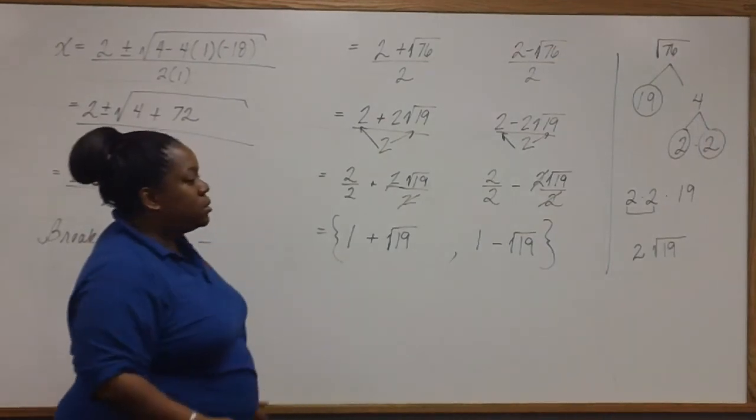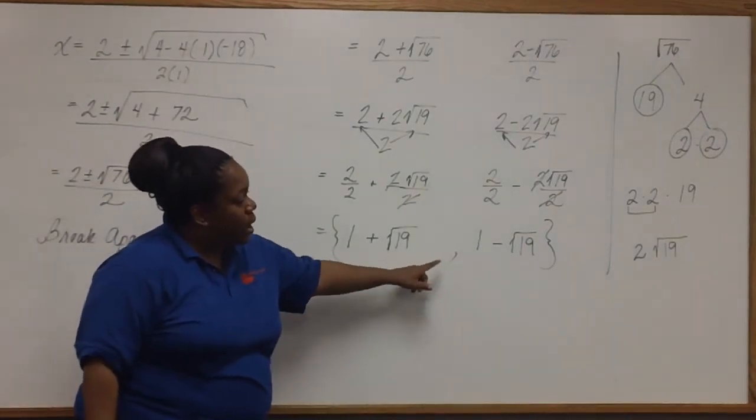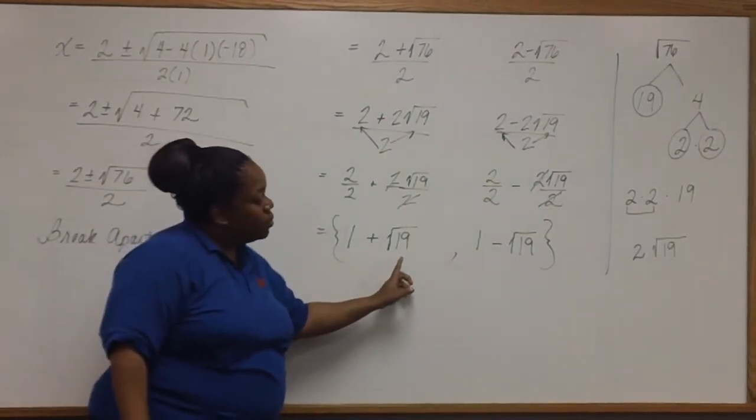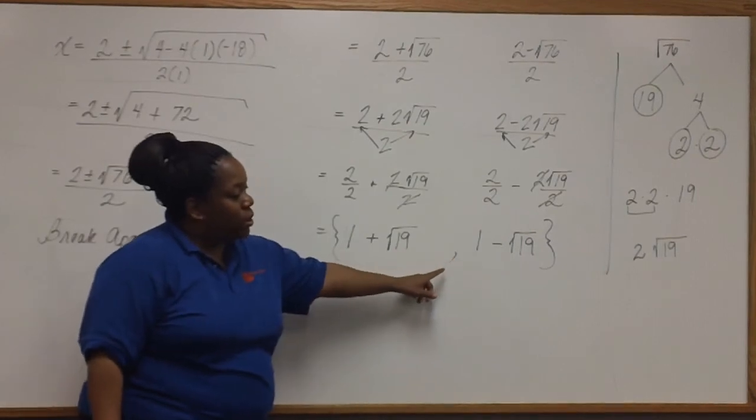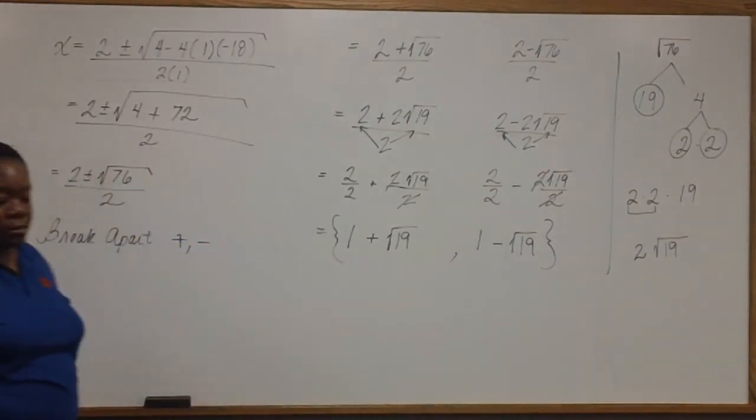Again, when you write your answer, make sure that you don't put the comma under the radical. Hit the right arrow key and then put your comma. This is your solution.